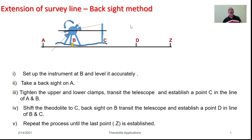In the backsight method, set the equipment at station B, carry out temporary adjustments, clamp the equipment, take a backsight on station A, and then transit the telescope towards C. With respect to B, measure the distance and mark station C in continuation with AB. The same process is repeated to mark station D, and so on until the last station Z.